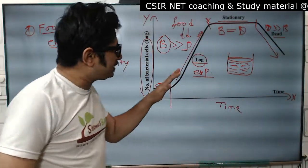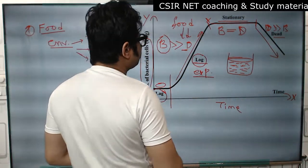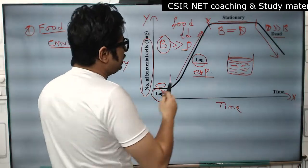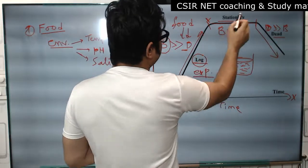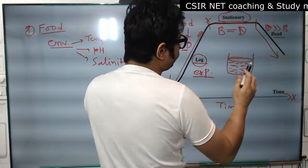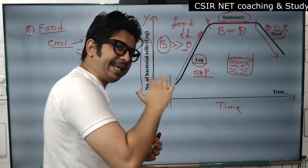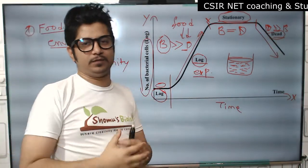So these are the four important phases: the lag phase, which is a preparatory phase; the log phase, which is the exponential phase; the stationary phase, which is the stabilization phase; and the death phase, which is the end phase of the bacterial growth curve.